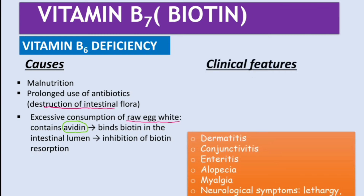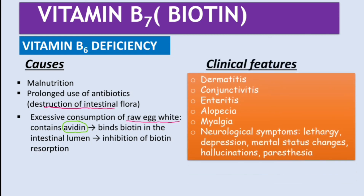Clinical features of vitamin B7 deficiency include dermatitis, conjunctivitis, arthritis, alopecia (hair loss), myalgia (muscle pain), and neurological symptoms such as lethargy, depression, mental status changes, hallucinations, and paresthesia.